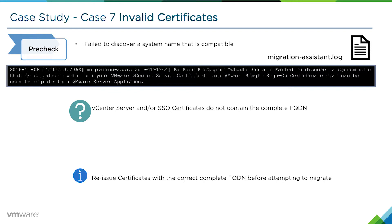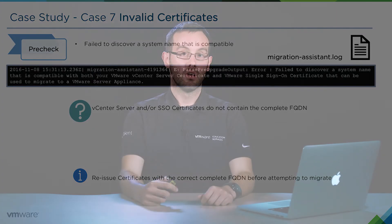To resolve this issue you need to reissue the certificates with the correct complete FQDN and then perform the migration again. That concludes this particular case study on invalid certificates that may prevent a migration.